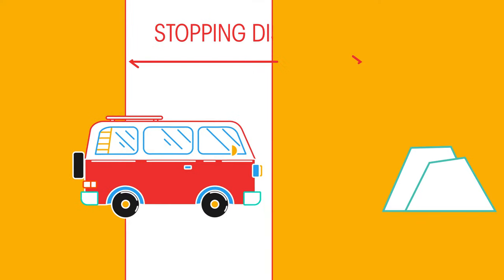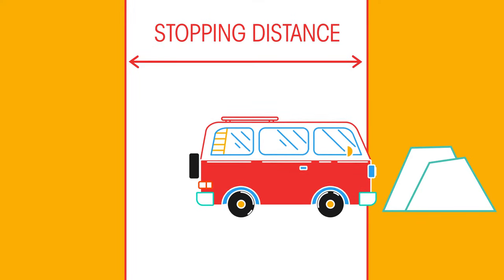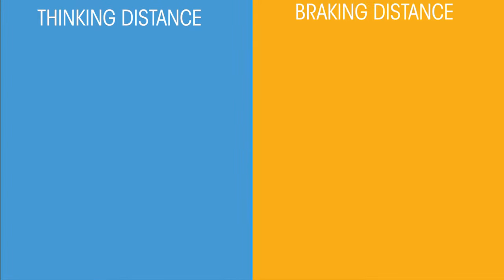Stopping distance is how far a car moves between the driver noticing something in front of them and the car coming to a stop. It's affected by two main factors: thinking distance and braking distance.